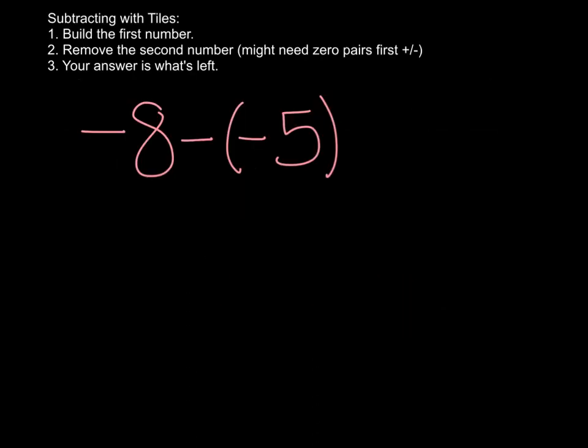So let's say we have the problem negative 8 minus negative 5. The steps for how to do that are up here at the top and it says we're going to build the first number. So when I say build, I'm just like draw it out. So we have negative 8. So 1, 2, 3, 4, 5, 6, 7, 8 negatives. That was this right here.